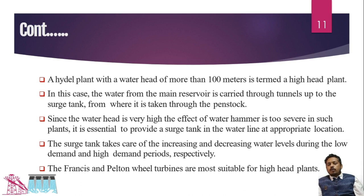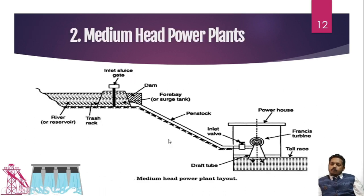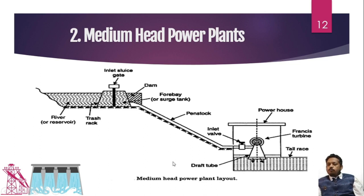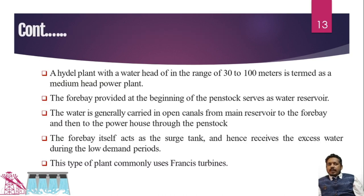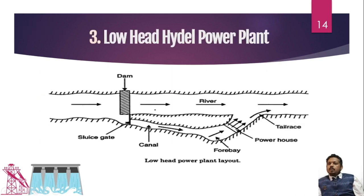In the medium head power plant, the head is 30 to 100 meters. Most things are similar to the high head plant, but the surge tank required is smaller. In medium head plants, a forebay — a facility that can flow excess water through another channel or tunnel — can act as the surge tank. Since the speed is a little less, a Francis turbine is used in this type of power plant.